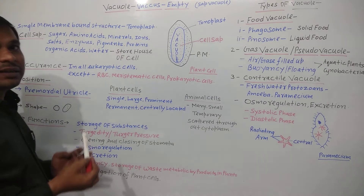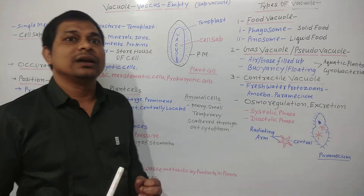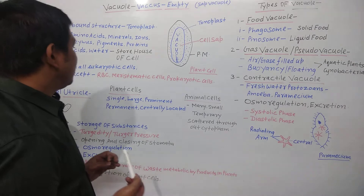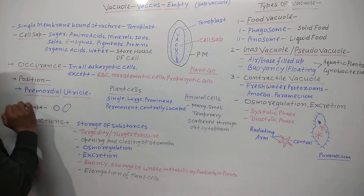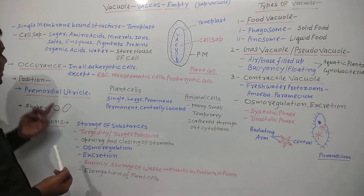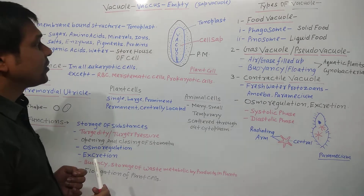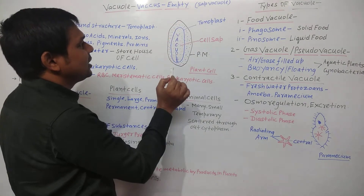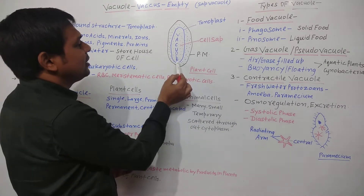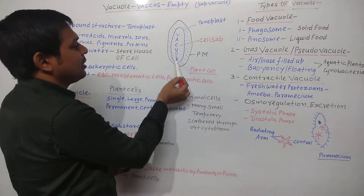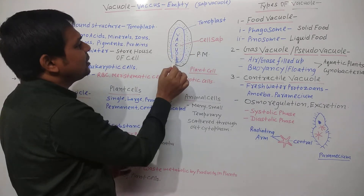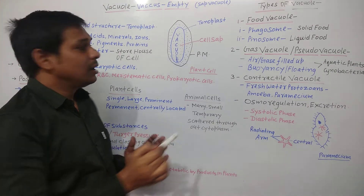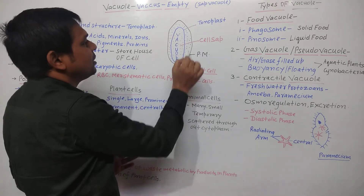Regarding the position of the vacuole in the cell, it is generally present in the cytoplasm of the cell. Now, a very important term is the primordial utricle. In a mature plant cell, as seen in this diagram, there is a single, permanent, prominent, and centrally placed vacuole.